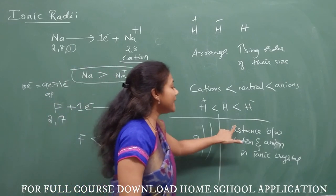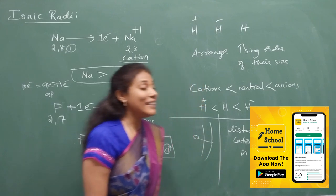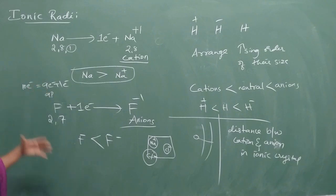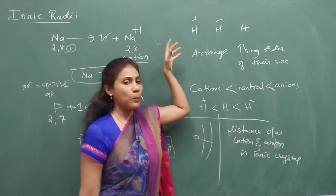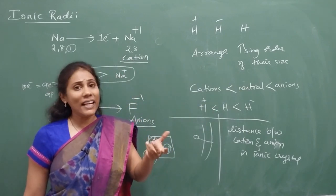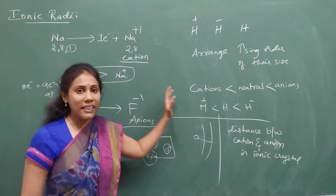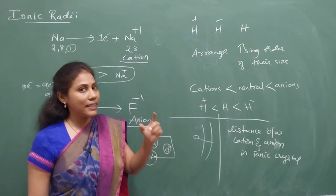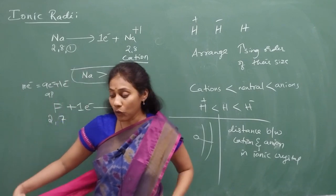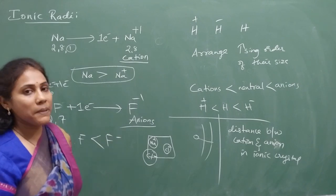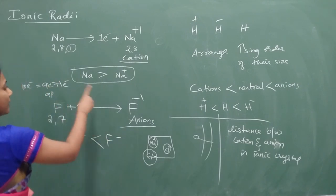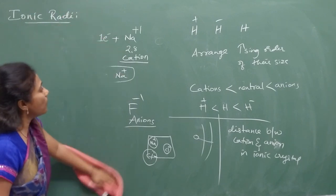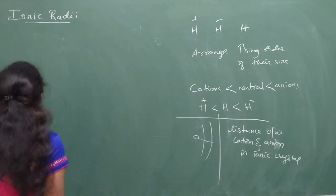Ionic radii is found by measuring the distance between cation and anion in an ionic crystal. Coming to the trends: ionic radii varies similarly to atomic radii — from left to right it decreases, and from top to bottom it increases. The trend is similar to atomic radii. One fundamental aspect you should know: cations are always smaller in size than neutral atoms, and neutral atoms are smaller in size than anions.